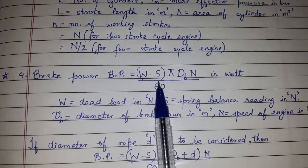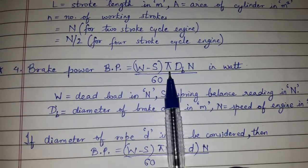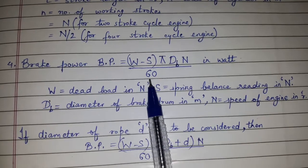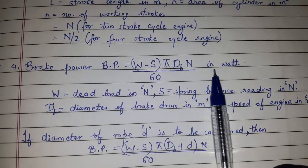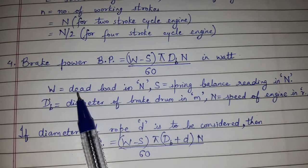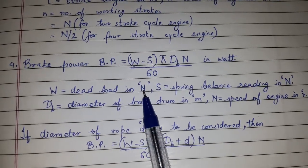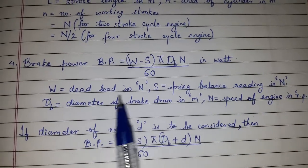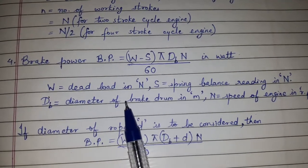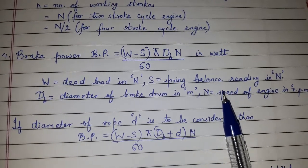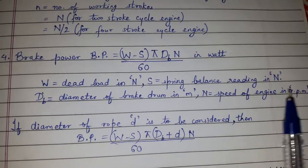Another formula is brake power, i.e. BP, is equal to (W - S) × π Db × N / 60 and the unit is in watt. Capital W is the dead load in Newton, S equal to spring balance reading in Newton, Db is equal to diameter of the brake drum in meter, capital N is the speed of engine in RPM.